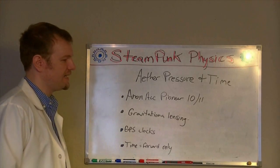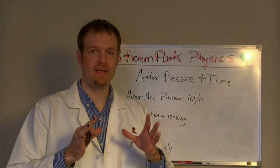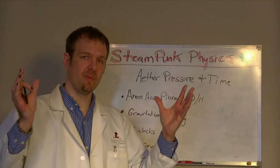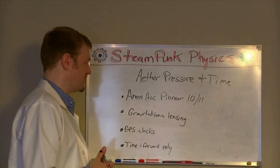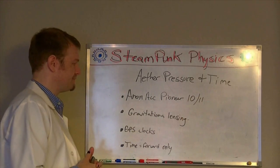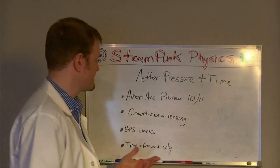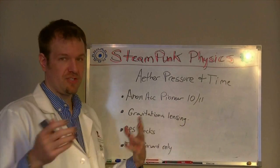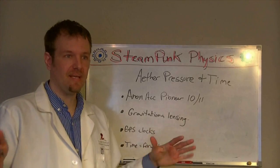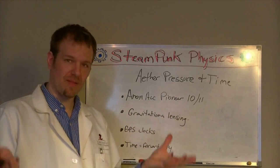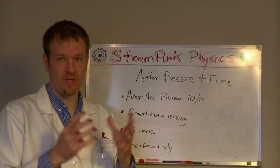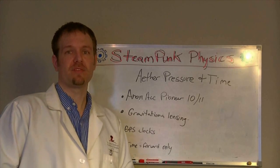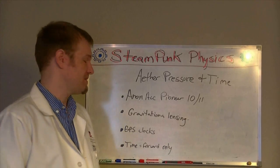The ether pressure near a planet is lower than the ether pressure further away from the planet — or any gravitational body. The sun, the Earth, and all of these things change the ambient ether pressure in the area around the solar system, around the moon, the Earth, etc. That means light will travel at slightly different speeds in these areas.